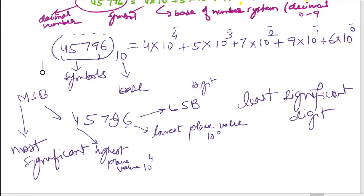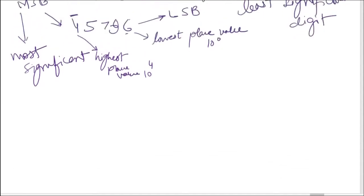For example, if you remove the 6 (LSB) and make it 7, the number changes from 45796 to 45797 — a difference of just 1. But if you change the 4 (MSB) to 5, the number becomes 55796 — a much larger change. So the higher the place value, the higher the significance of that digit.